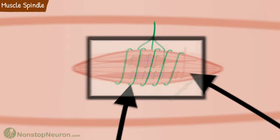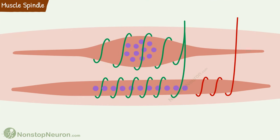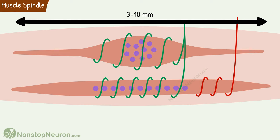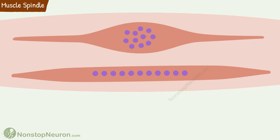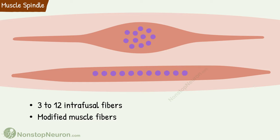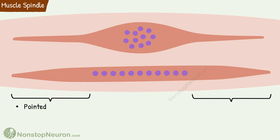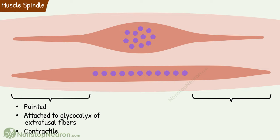Now let's see the structure of the muscle spindle in more detail. Muscle spindles are 3 to 10 mm long. The main components of the muscle spindle are the intrafusal muscle fibers and their nerve supply. Each muscle spindle has 3 to 12 intrafusal fibers. They are basically modified muscle fibers. At the ends, they are pointed and the ends are attached to the glycocalyx of the surrounding large extrafusal fibers. They have contractile elements like actin and myosin, so they can contract when stimulated.